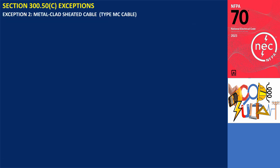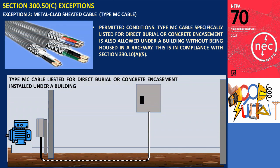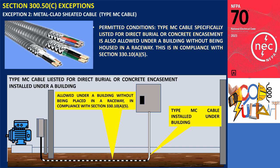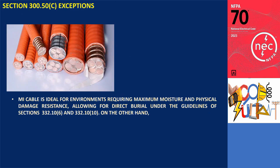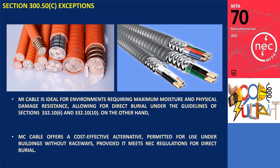Exception No. 2: Type MC Cable. Type MC Cable, specifically designed for direct burial or concrete encasement, is also allowed under a building without being placed in a raceway, in compliance with Section 330.10(A)(5). MI Cable is ideal for environments requiring maximum moisture and physical damage resistance, allowing for direct burial under the guidelines of Section 300.5. On the other hand, MC Cable offers a cost-effective alternative, permitted for use under buildings without raceways, provided it meets NEC regulations for direct burial.